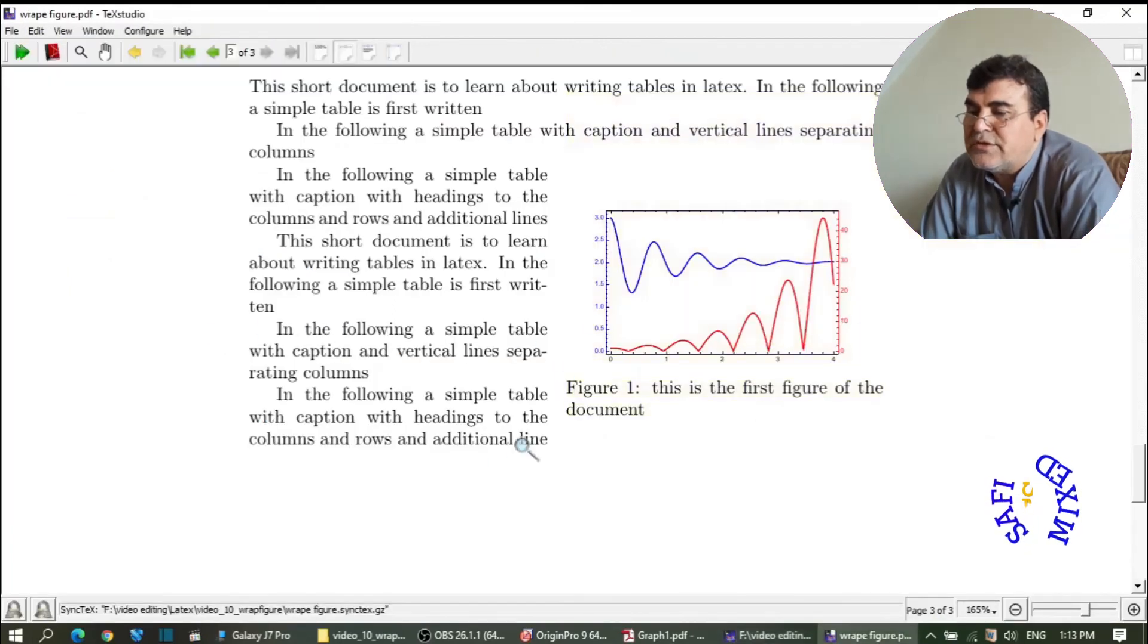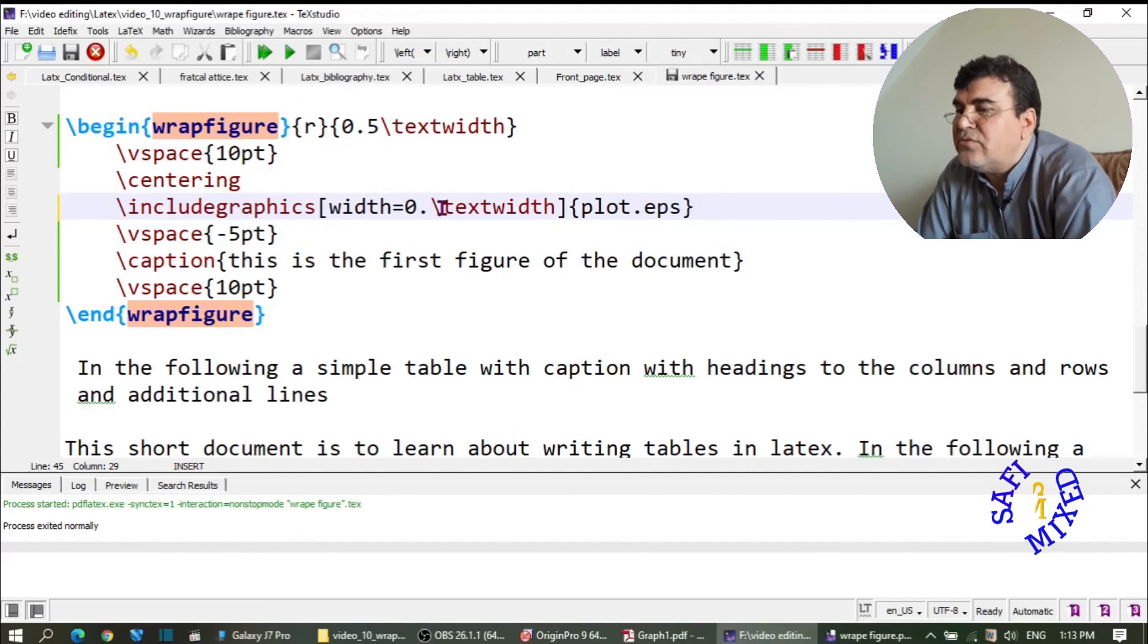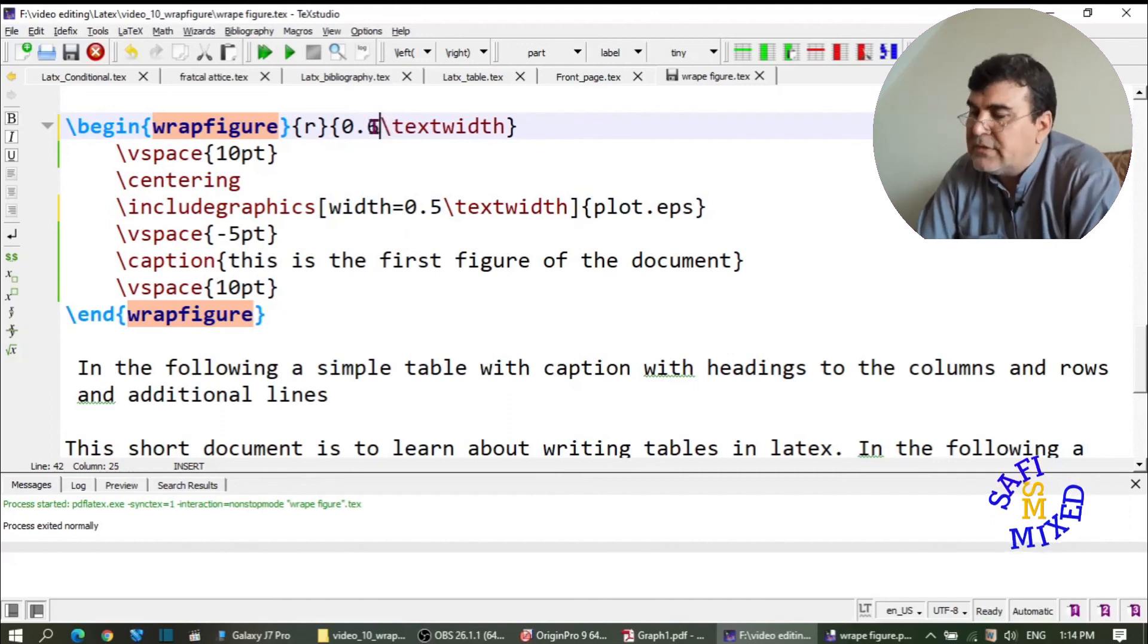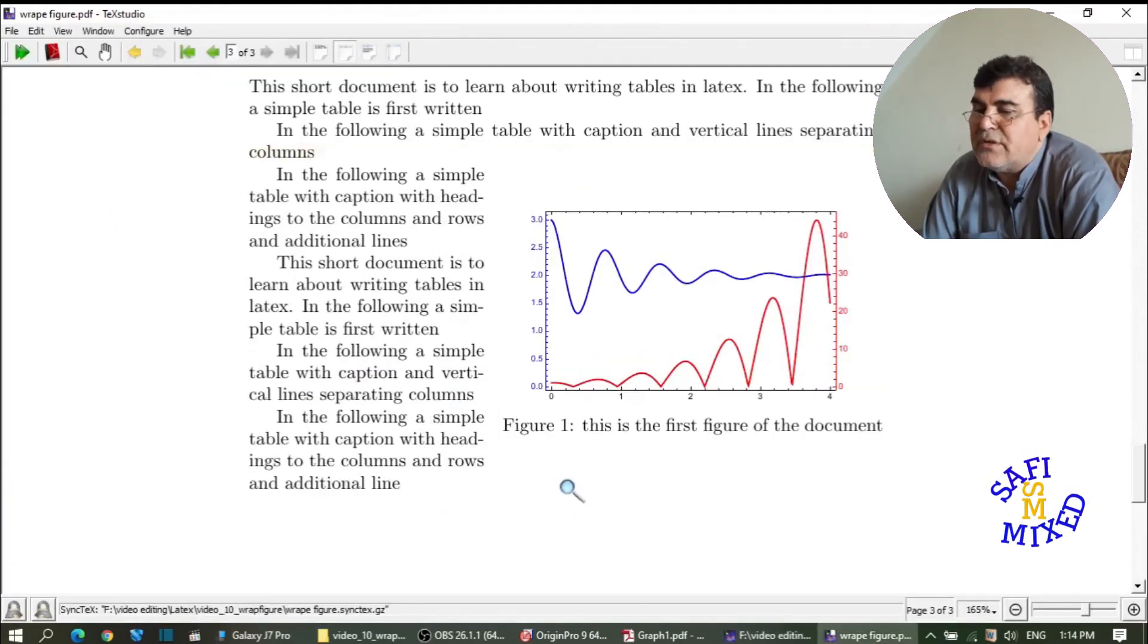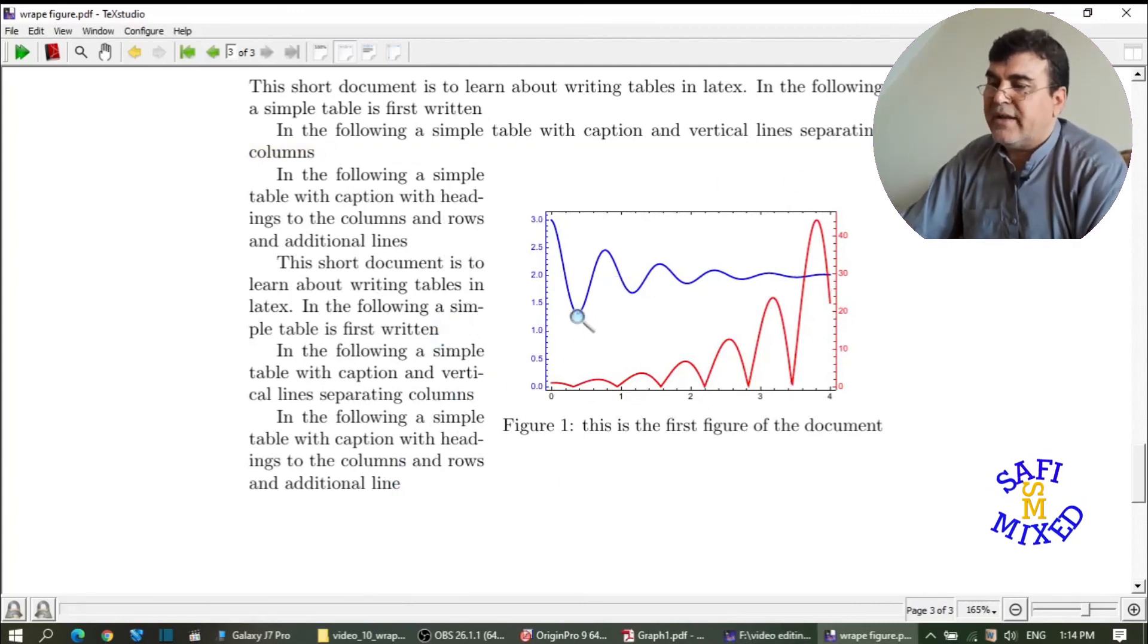Let us get closer. And now this space has enlarged, you see that. Let me increase this value, in this way due to 6, and build the document. You see now this space has increased a lot. So this way you can wrap the text around the figure.